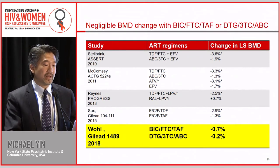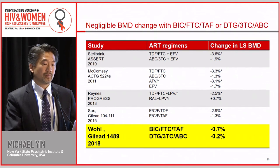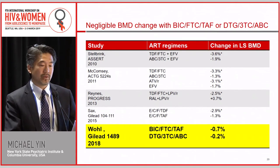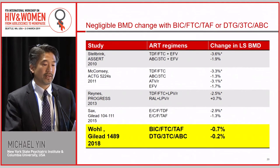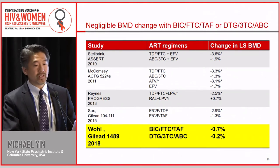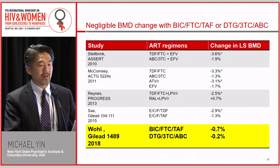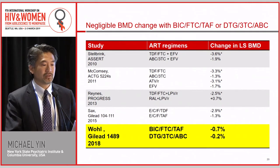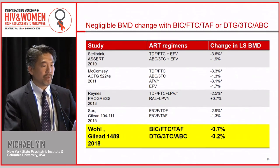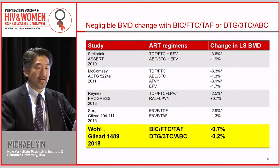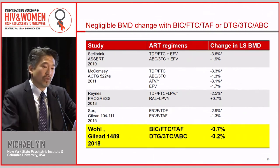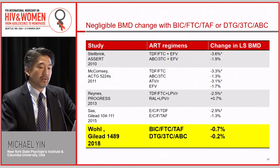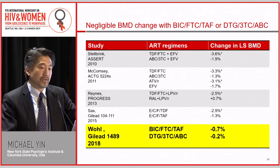A recent study looking at integrase-based regimens — either bictegravir/FTC paired with TAF, or dolutegravir/lamivudine paired with abacavir — incredibly showed almost negligible effect on bone density. Compared to the earlier studies, there is almost no measurable effect on lumbar spine bone density after a year.